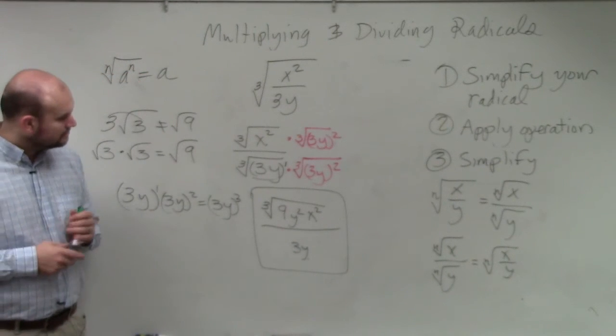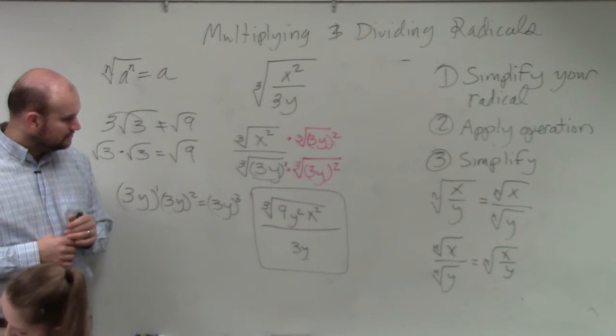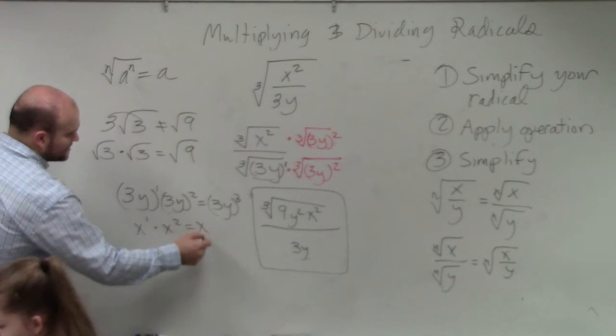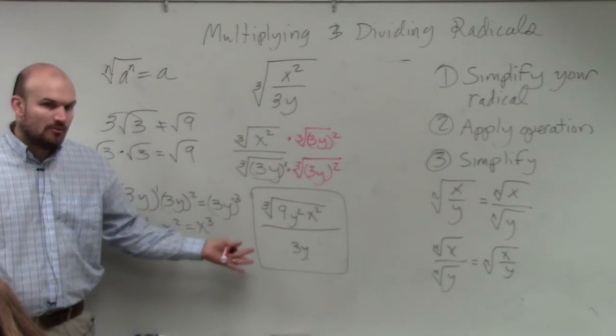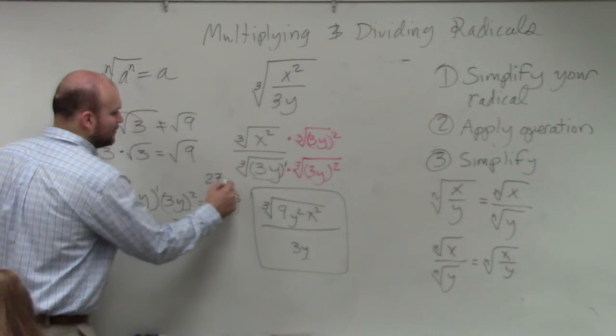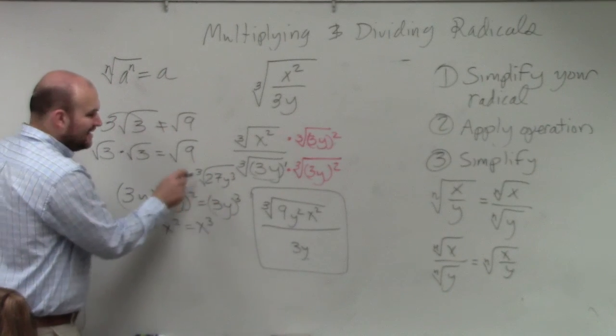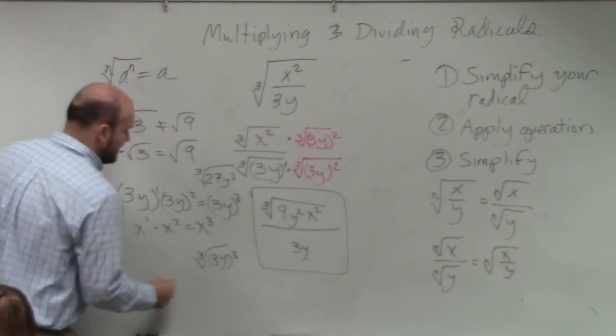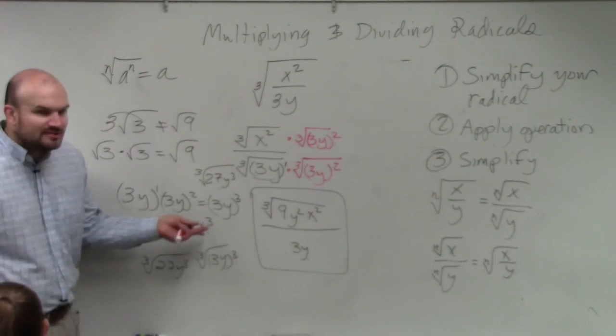So when you multiply 3y to the first times 3y to the second, why did you multiply the inside the parentheses? You could, but I mean, it's like this. x to the first times x squared equals x cubed. The reason why I left it out there is because I knew I was going to use the identity element. There's nothing wrong with multiplying this to give you 27y cubed.